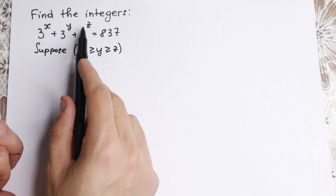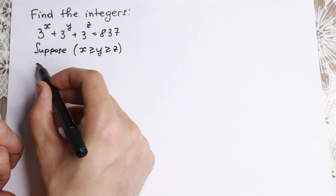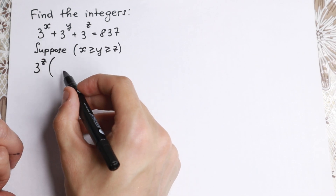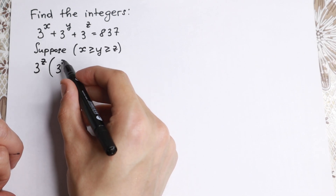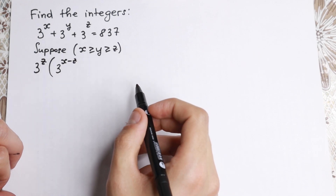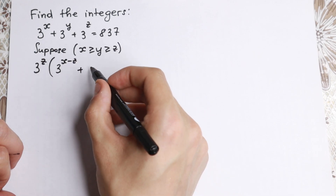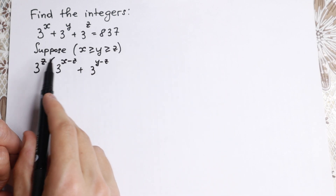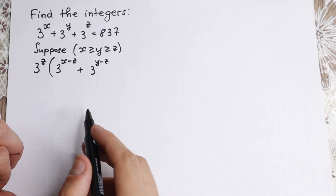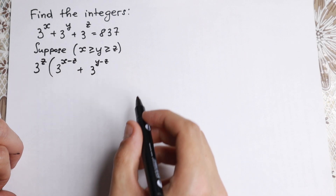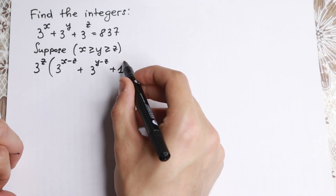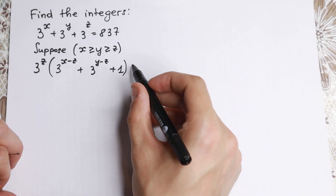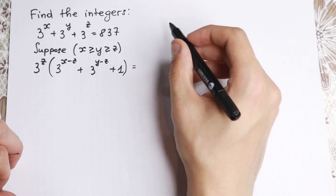Right now I want to factor out 3 to the power z. So in this element we have 3 to the power x minus z, plus 3 to the power y minus z — we're factoring it, substituting the power inside the parentheses — and plus 1. So I've factored out 3 to the power z. On the right-hand side, let's look at something really interesting.